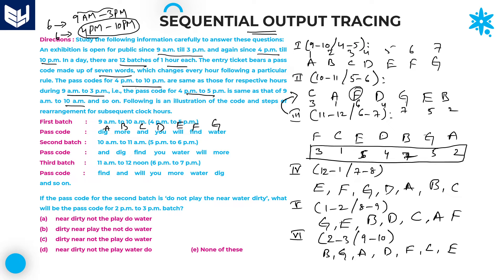Now you can solve problems using these codes. For question 1: the passcode for the second batch is given as C, A, F, D, G, E, B.